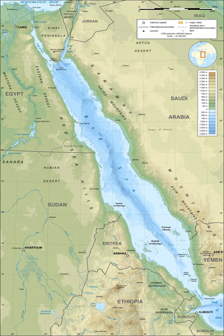The direct rendition of the Greek Erythra Thalassa in Latin as Mare Erythraeum refers to the north-western part of the Indian Ocean, and also to a region on Mars.